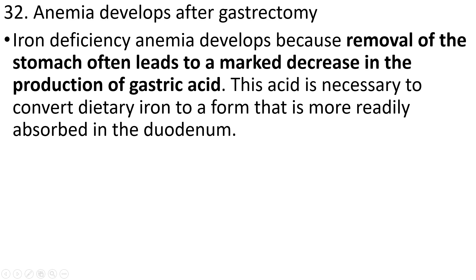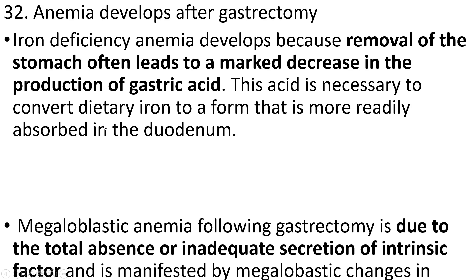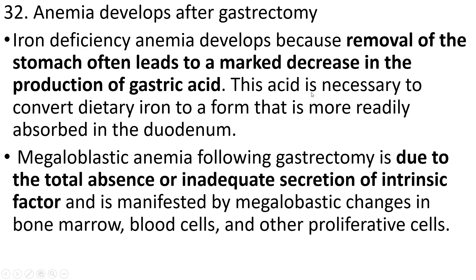Absence of a large portion of the stomach often leads to decreased production of gastric acid, thus decreasing the conversion of dietary iron to a more readily absorbable form. Megaloblastic anemia following gastrectomy is due to total absence of or inadequate secretion of intrinsic factor, which is secreted by stomach cells. When the stomach is removed, absence of intrinsic factor leads to megaloblastic anemia changes in the bone marrow, red cells, and other proliferative cells, because intrinsic factor is necessary for the development of hemoglobin.